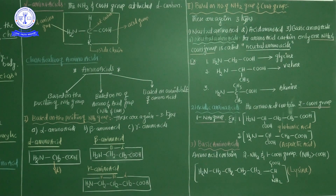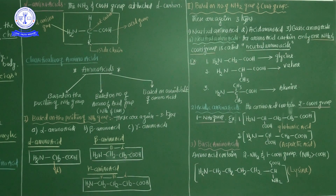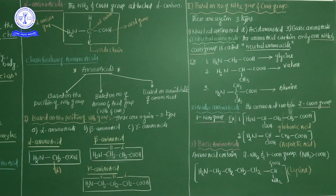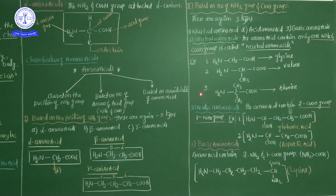In this session, I successfully completed the protein introduction and alpha amino acid structures, and the types of amino acids. One more example of a basic amino acid — not only lysine, but also arginine. Arginine and lysine are the best examples of basic amino acids. Two classifications of amino acids are completed: based on position of NH2 group, and based on number of NH2 and COOH groups. In the next session, I will continue the third classification based on the availability of amino acids.